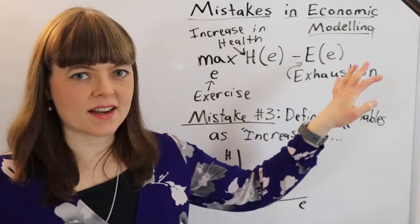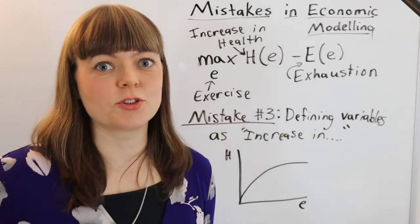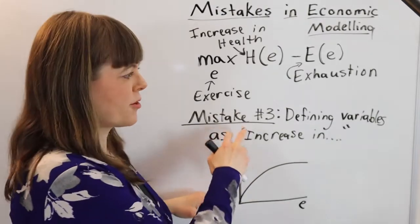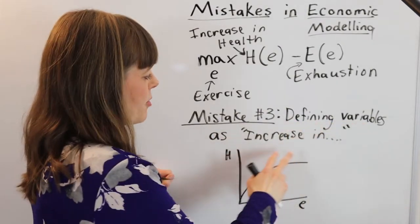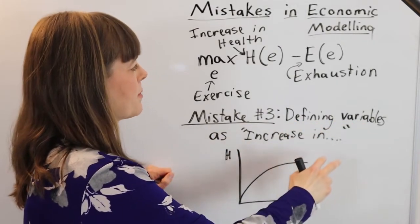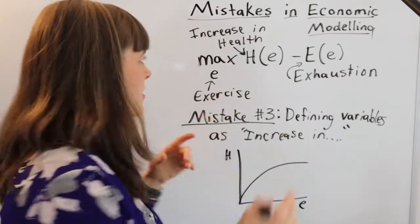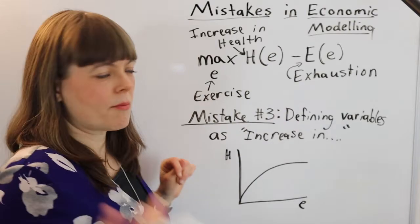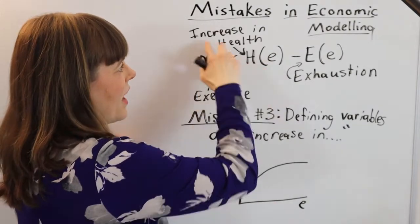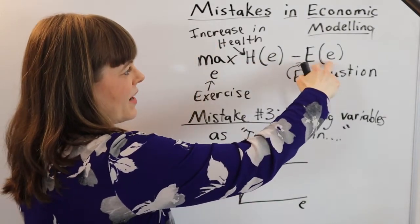I'm doing a series on mistakes in economic modeling that I see in student models, and mistake number three is defining variables as increase in something. So here's an example of an incorrect model that students have put together, and the model is they're maximizing an increase in health minus exhaustion.